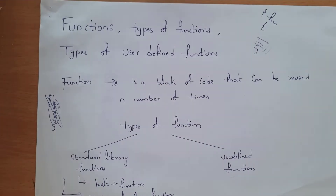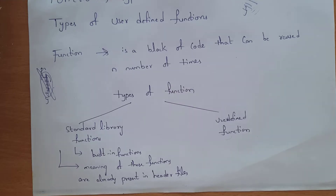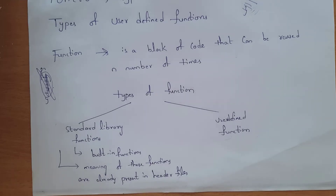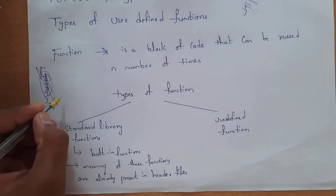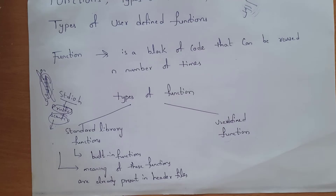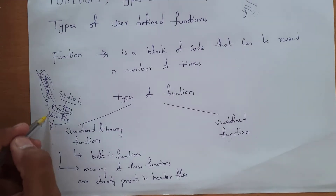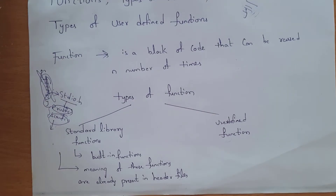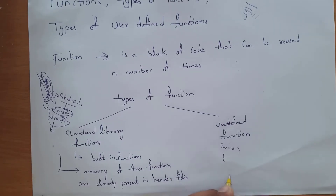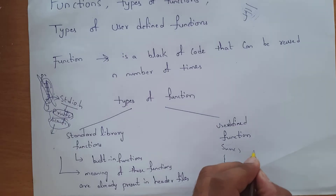Functions are classified into two types: standard library functions and user defined functions. Standard library functions are built-in functions whose meanings are already present in header files. For example, printf and scanf are built-in functions because their definitions are present in the stdio.h header file. User defined functions are functions created by the user for their own needs, such as a function named 'sum' or 'fun'.